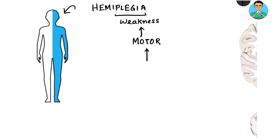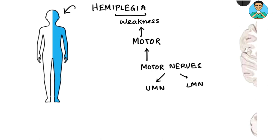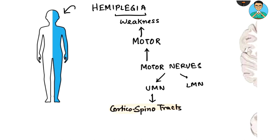If a motor attribute is present, that means there will be involvement of motor neurons or motor nerves. There can be upper motor neurons and lower motor neurons. The upper motor neurons are known as corticospinal pathways or corticospinal tracts. So today's discussion will revolve around the corticospinal tracts. To understand hemiplegia, we have to understand the corticospinal tracts.